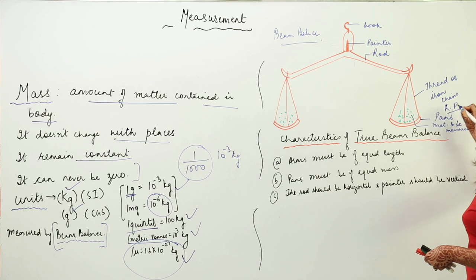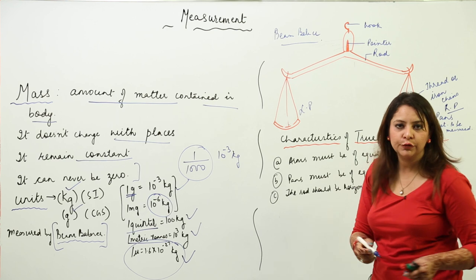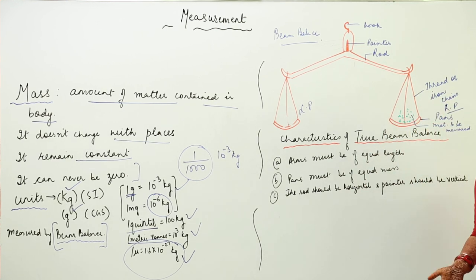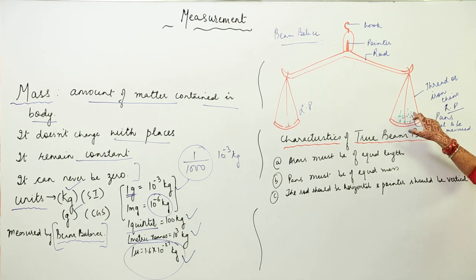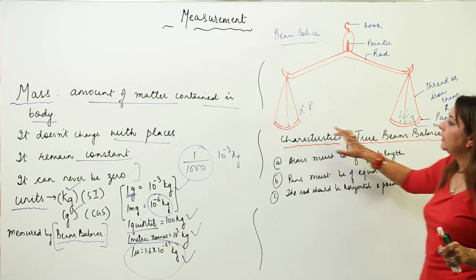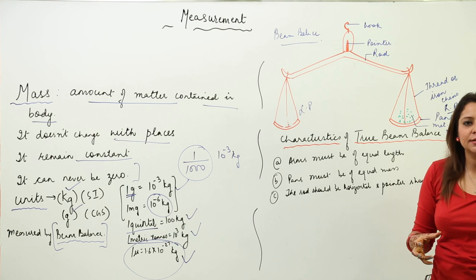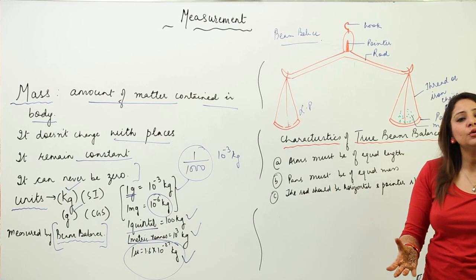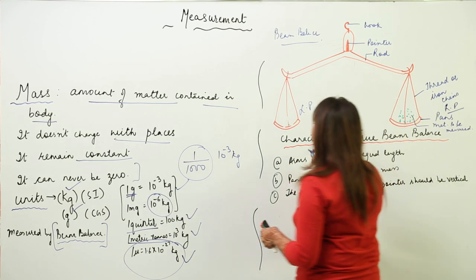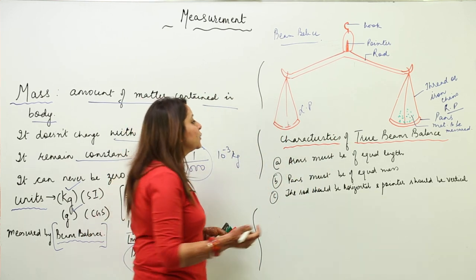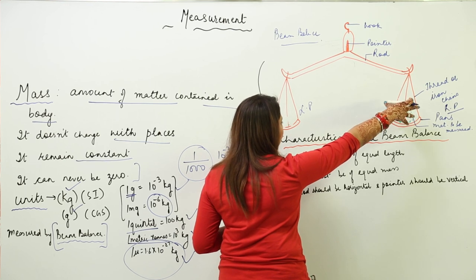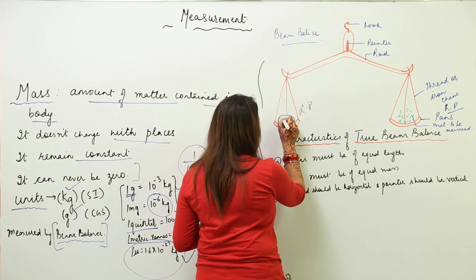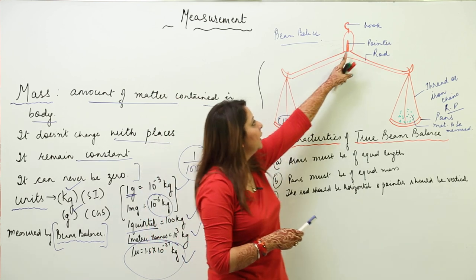The iron chains are used because they can bear a certain mass. There is a right pan and a left pan. To use it, place the object whose mass is to be measured on the right pan. Suppose you go to a shop and ask for 1 kg of pulses — the grocer selects a quantity of dal and places it on the right pan.